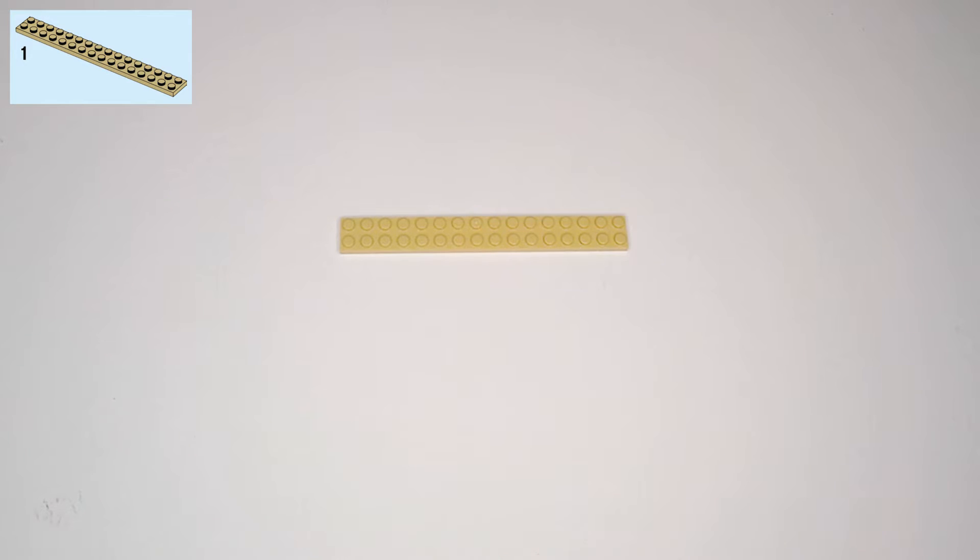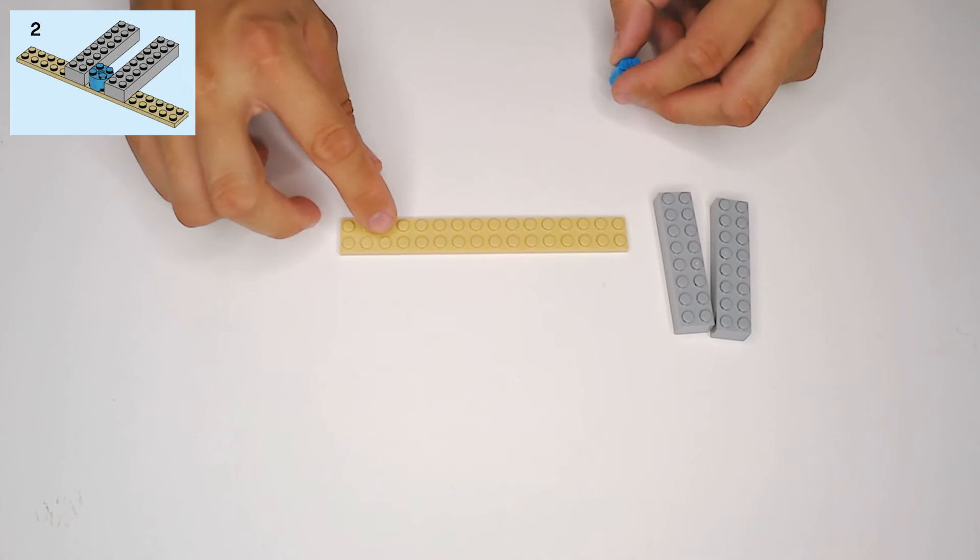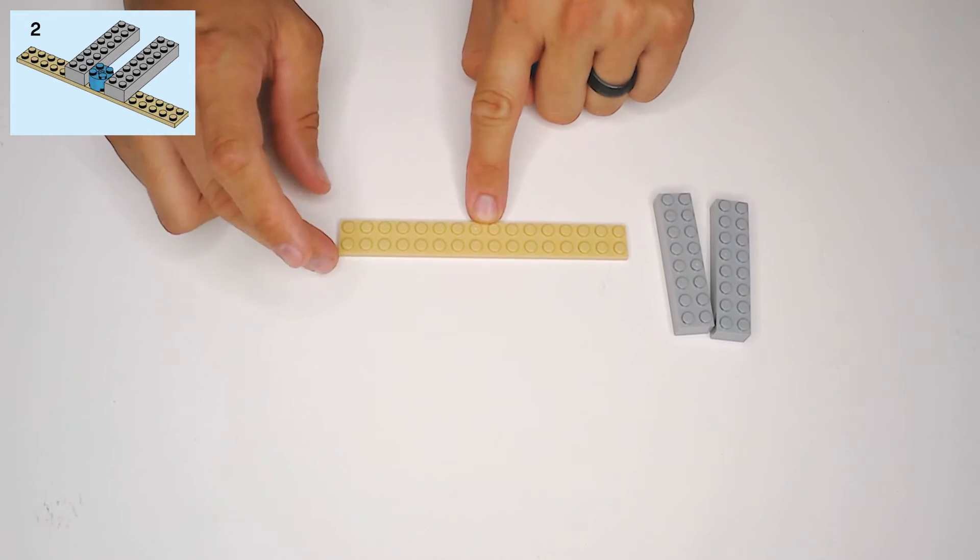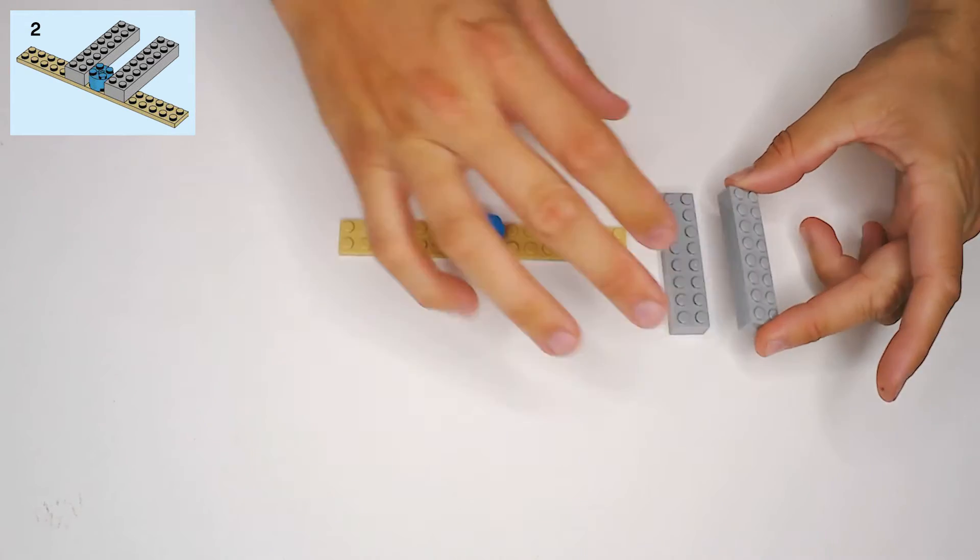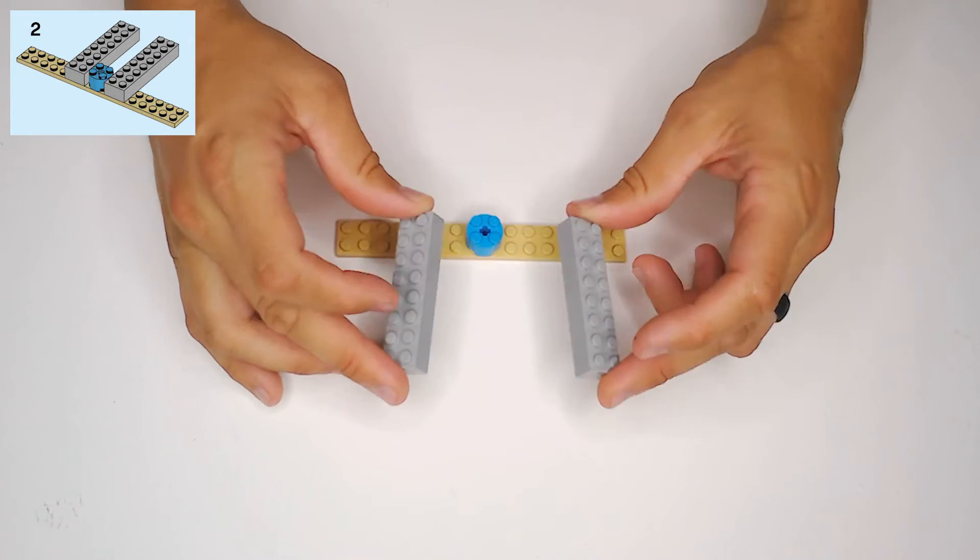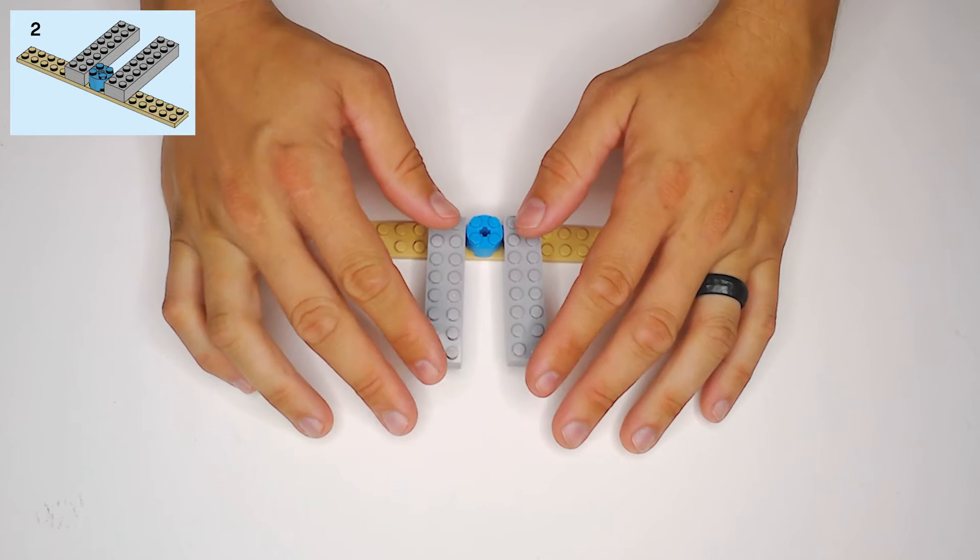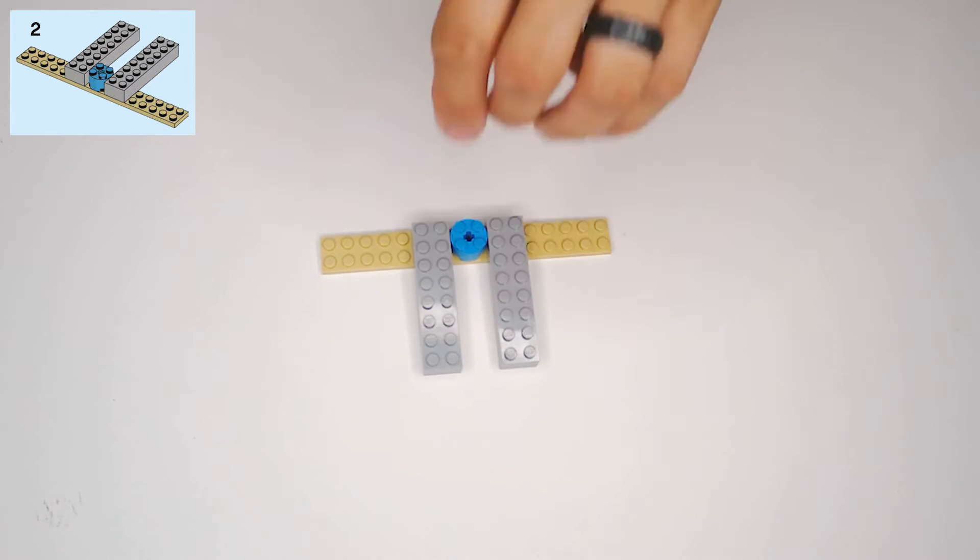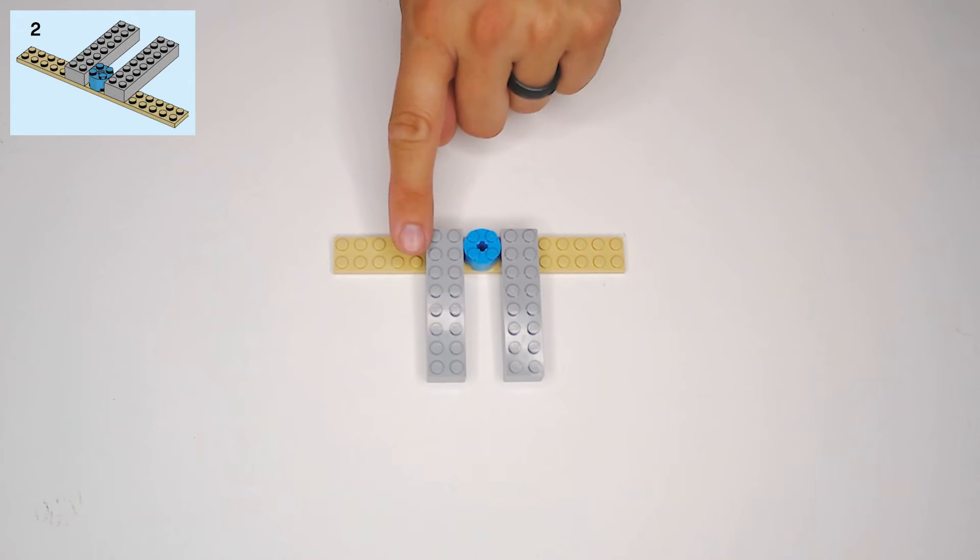Then let's grab two of these light gray 2x8 blocks, and this is step two by the way. Then we need one of these teal 2x2 round blocks, and the round block is going to go right in the middle, and then these gray pieces. They're going to be flush with the top edge, and then hang down the bottom like that on either side of that teal piece, and then you should have a 2x5 stud space on each side.